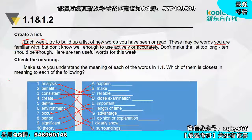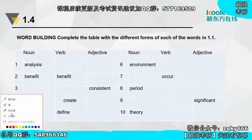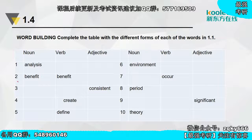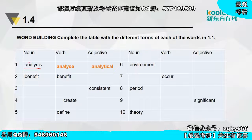下面要做一个word building的活动，这个活动给我们一个学习词汇的方法——去找词的家族。当你看到一个高频词而你又不太了解它时，要做的就是找全它的家族。比如找到analysis，就要找它的动词analyze，以及形容词analytical。从一个词出发，找到其他词性，连成一条线，形成一个完整的word family。